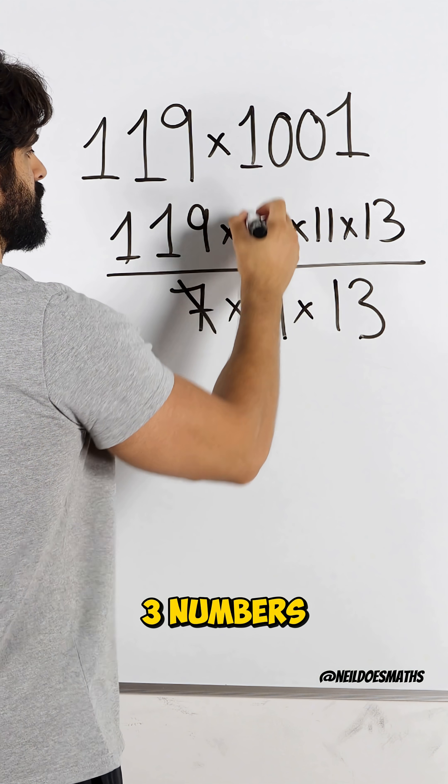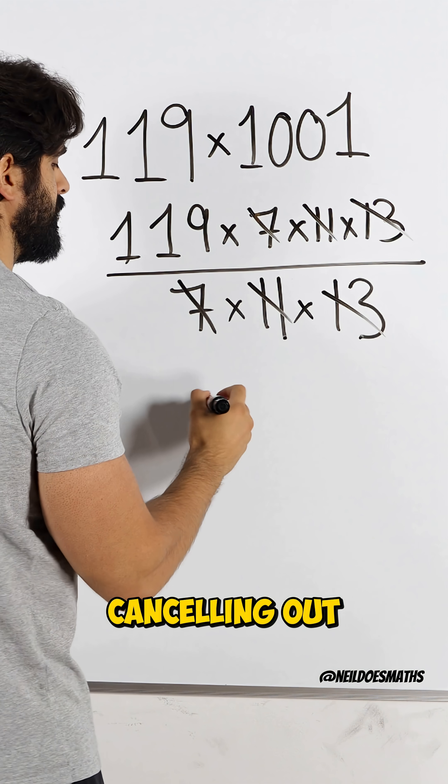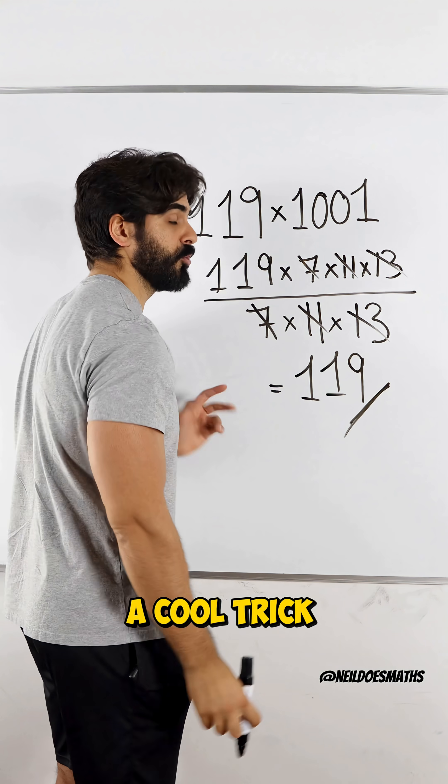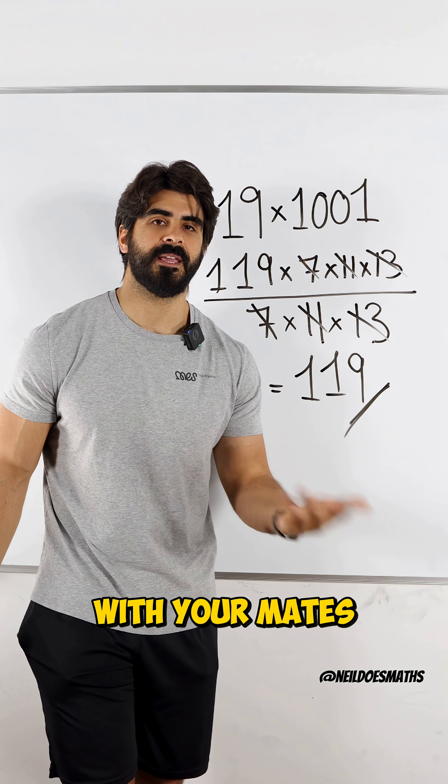you are just dividing by these three numbers, which always end up cancelling out, and you're left with the original number. A cool trick you can try with your mates. Nice.